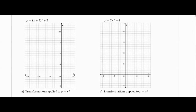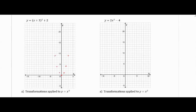Just watch — I don't want you to do anything yet. If I were to put the parent graph on this it would look like this. I don't have an A value because there's nothing out in front of that bracket, so my A value is just 1. My H is actually negative 3, and my K is 2. When I look at y = (x+3)² + 2, those are the A, H, and K values I get.